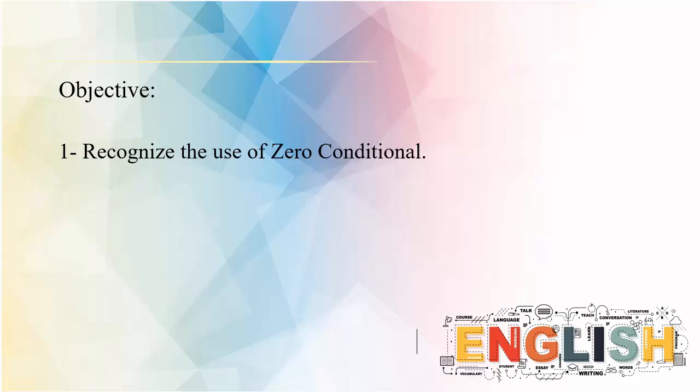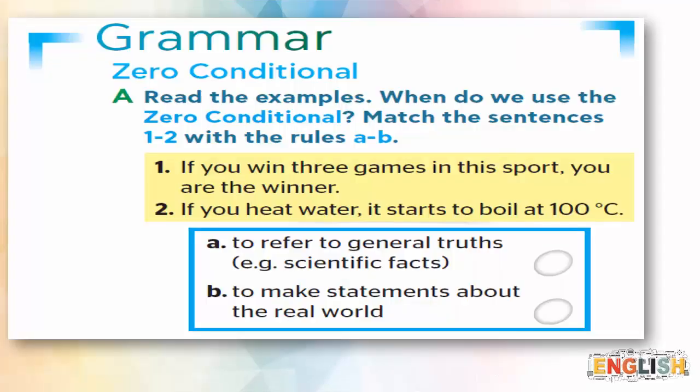Let's start with Activity A. Here you're going to read the examples, then tell me: when do we use the zero conditional? You're going to match sentences one and two with rules A and B. Before that, let's read the two sentences together. Sentence one: 'If you win three games in this sport, you are the winner.' Sentence two: 'If you heat water, it starts to boil at 100 degrees Celsius.' I'll give you five seconds, then we will check your answers.